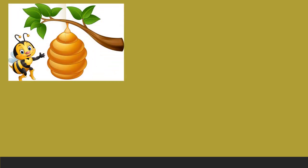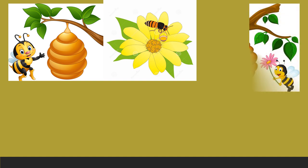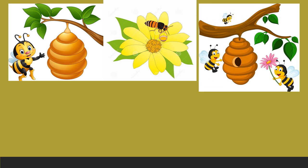We get honey from honey bees. Honey bees collect nectar from flowers. Nectar is a sweet juice found in flowers. Honey bees turn that sweet juice into honey and store it in their house called a beehive.